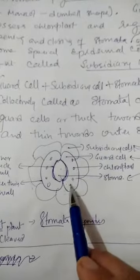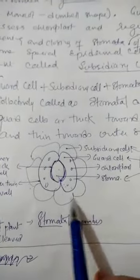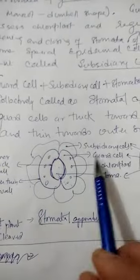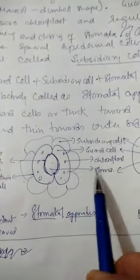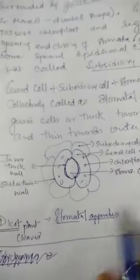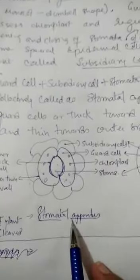They are rich in chloroplast and they are surrounded by special epidermal cells which are called subsidiary cells. These are guard cells, this is chloroplast, and this is stoma. This complete structure is called stomatal apparatus.